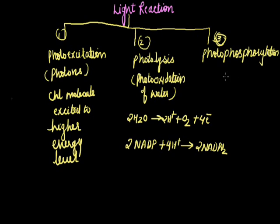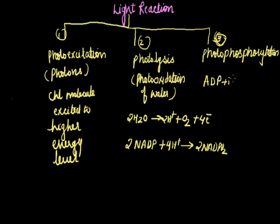Photo-phosphorylation is the third step of the light reaction. During this process, ATP, that is adenosine triphosphate, which is a chemical form of energy, is produced. It takes place in quantosomes. Magnesium ions and inorganic phosphate are required to convert ADP, that is adenosine diphosphate, into ATP. This reaction takes place in the presence of magnesium ions.